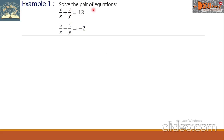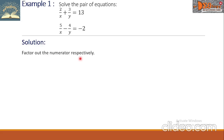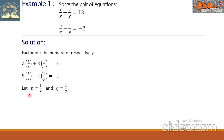Example 1. Solve the pair of equations: 2 over x plus 3 over y equals 13, and 5 over x minus 4 over y equals negative 2. We factor out the numerators: the first equation becomes 2 times 1 over x plus 3 times 1 over y, and the second is 5 times 1 over x minus 4 times 1 over y. Then we let p equals 1 over x and q equals 1 over y, so the equations become 2p plus 3q equals 13 and 5p minus 4q equals negative 2.